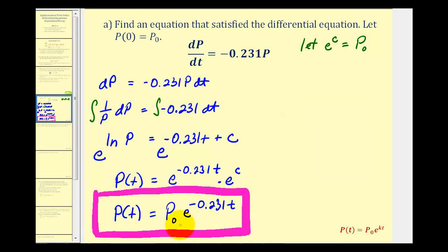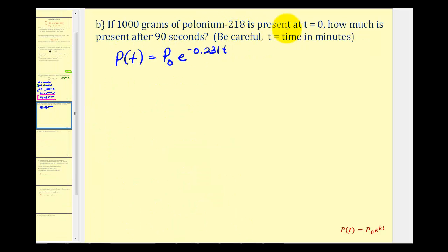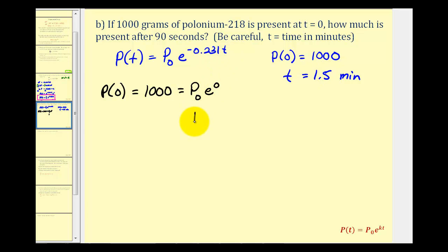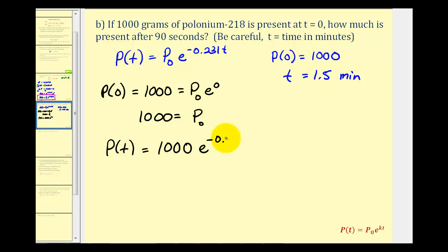Now we can use this function to answer the remaining questions. If 1,000 grams of polonium-218 is present at t equals zero — meaning p of zero equals 1,000 — how much is present after 90 seconds? We need to be careful: the time was given in minutes, so 90 seconds equals 1.5 minutes, meaning t equals 1.5. Verifying: at t equals zero the exponent is zero, e to the zero is one, confirming p sub zero equals 1,000. So the particular solution is p of t equals 1,000 times e raised to the power of negative 0.231 t.